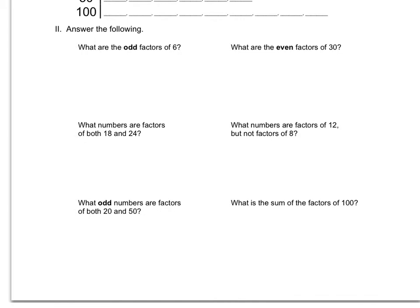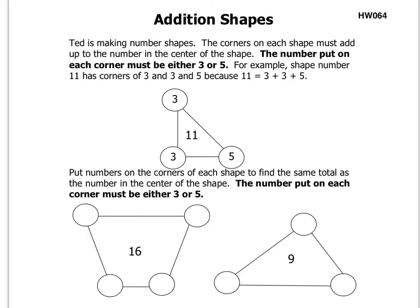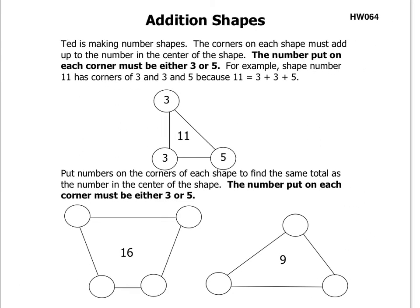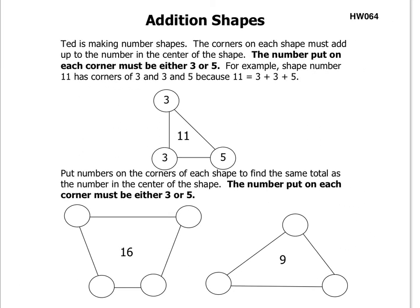Moving on to the next side here, we have addition shapes. Addition shapes: Ted is making number shapes. The corners on each shape must add up to the number in the center of the shape. The number put on each corner must be either 3 or 5. For example, shape number 11 has corners of 3 and 3 and 5 because 11 equals 3 plus 3 plus 5. The corners are either 3 or 5 only, and we know that 3 plus 3 is 6 plus 5 makes 11.